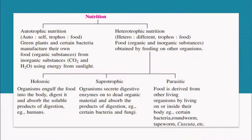Then heterotrophic nutrition — 'hetero' means different and 'troph' means food. Heterotrophs are organisms which depend upon autotrophs or other heterotrophs for their food. In heterotrophic nutrition, food consists of organic and inorganic substances obtained by feeding on other organisms.